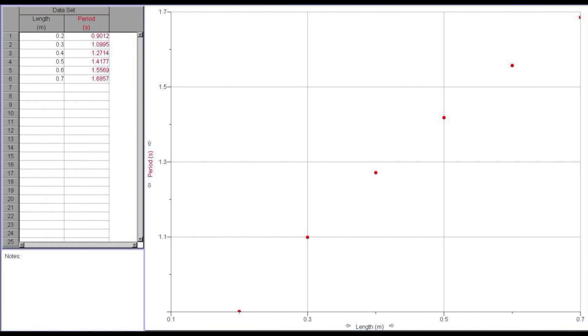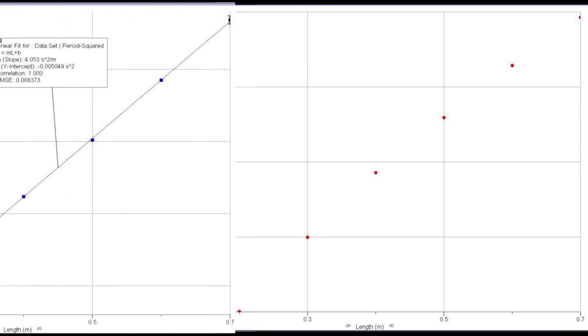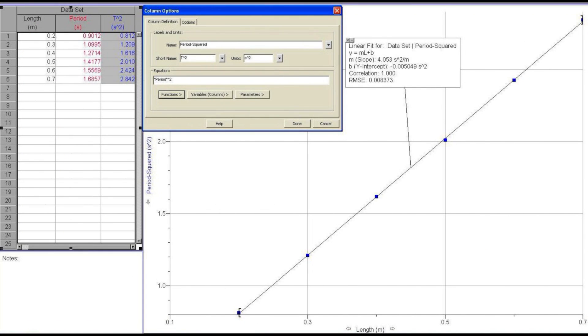Enter your period and length data into graphical analysis, but don't expect a straight line. The line is only straight when you create a new calculated column with periods squared, and plot that versus length. The slope of this line should be 4 pi squared over g. Thus, the slope yields the value of g.